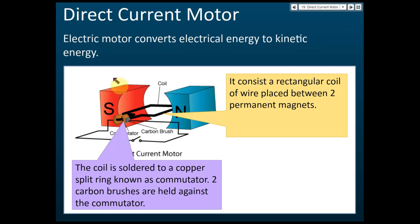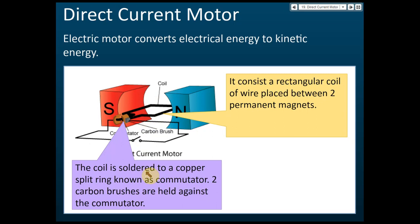First, let's look at the structure. There's a rectangular coil of wire placed between two permanent magnets. In every direct current motor there is a coil. I'm showing this coil with one wire, but actually a coil can have many windings — many turns. There's a coil and a permanent magnet.